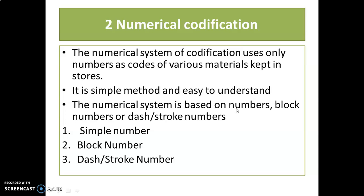Then numerical codification. From the name itself, the codes are numbers. The numerical system of codification uses only numbers as codes of various materials kept in stores. It is a simple method and easy to understand. The numerical system consists of numbers like simple numbers, block numbers, and dash or stroke numbers.